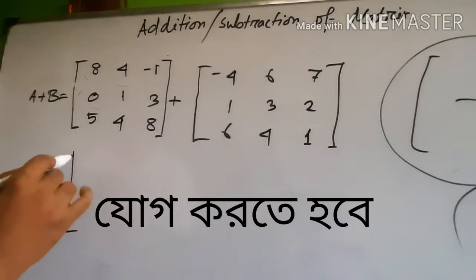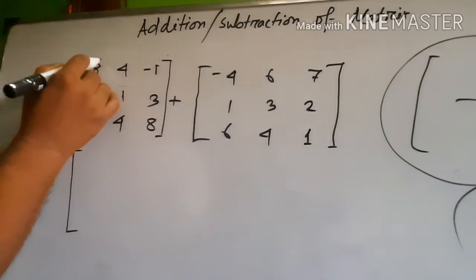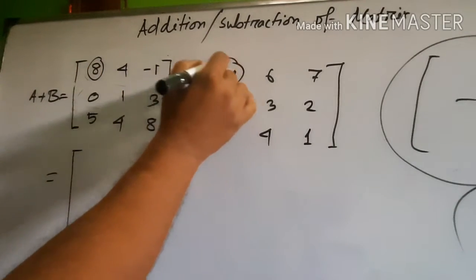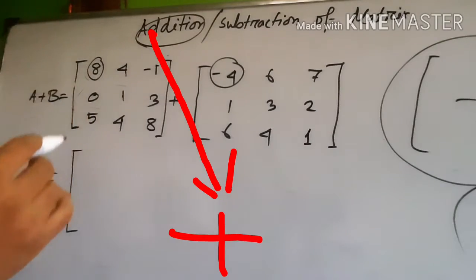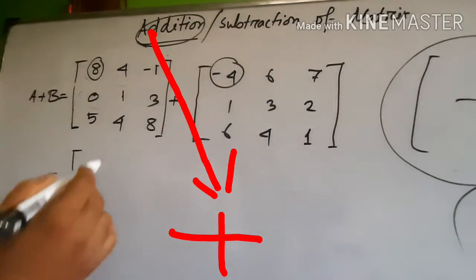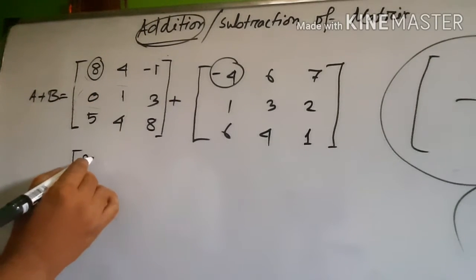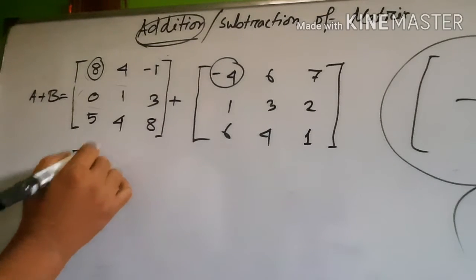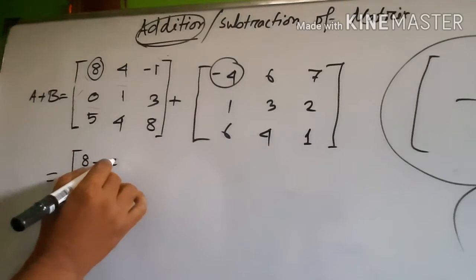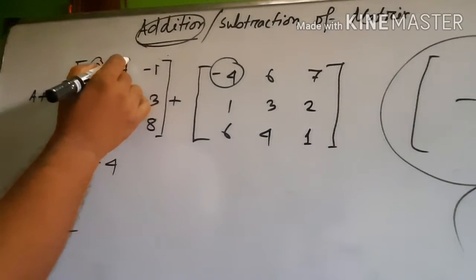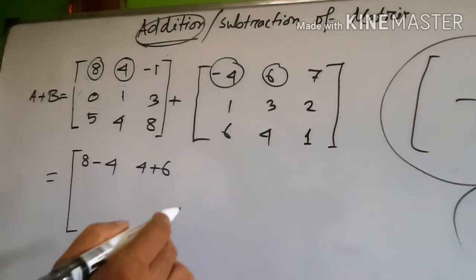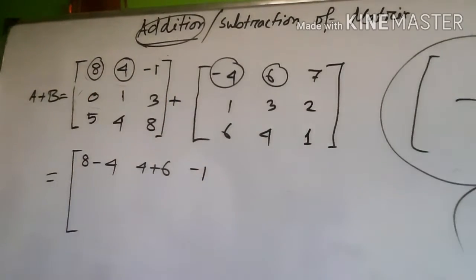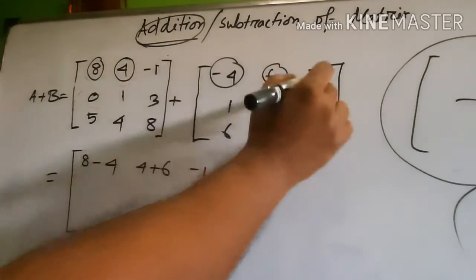Matrix A and matrix B. Now we do the first addition. We use plus for addition. Eight plus, formula plus, but plus minus, minus four. Second, four plus six. Then minus one plus seven. First row and first row is completed.